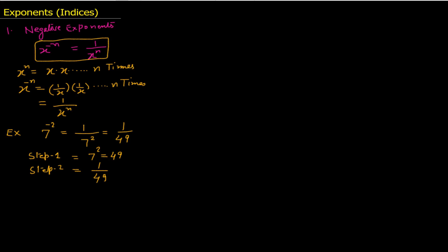This also works in the opposite direction. For example, if you have 1 divided by 5 raised to the power minus 2: since it is in the denominator, bring it to the numerator and change the sign of the power. So this equals 5 raised to the power 2, which is 25. In both cases, whenever the exponent is negative, you simply flip it over, change it to a positive exponent, and then multiply as usual.